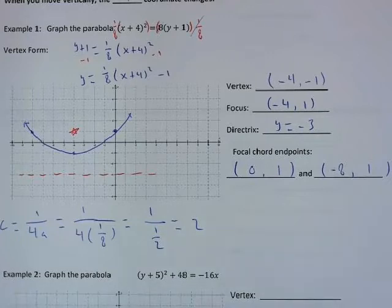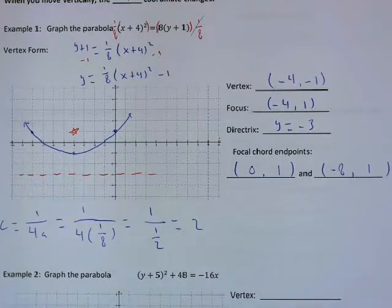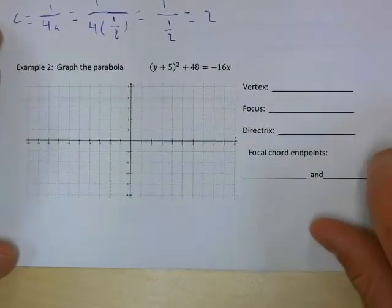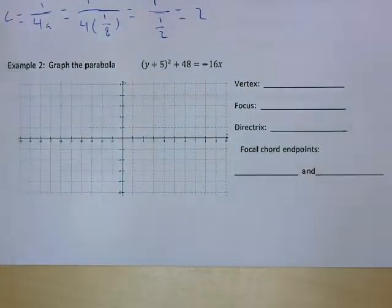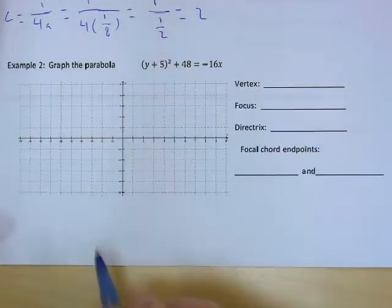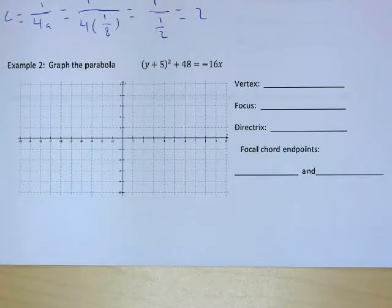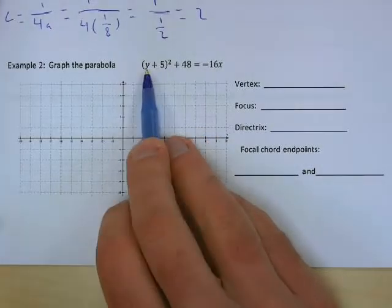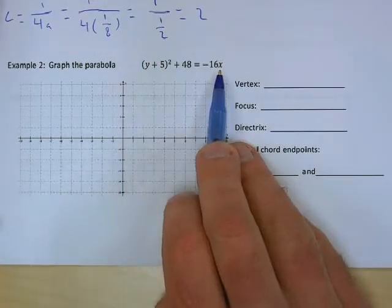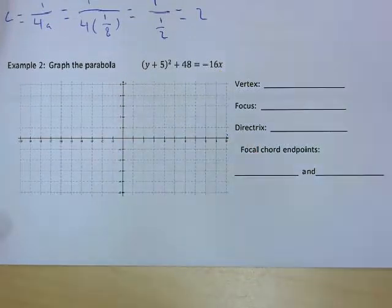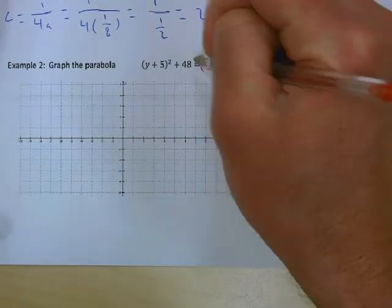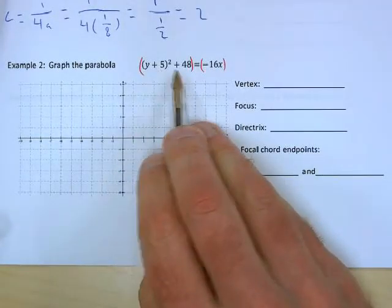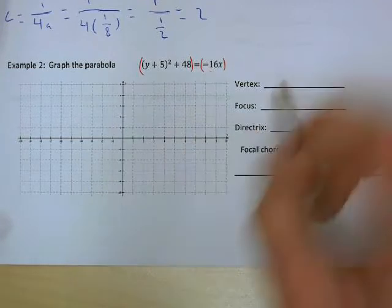That's very similar to the last section — the only difference is the vertex is moving around. Parabolas might be up/down or sideways. Let's look at Example 2. We want to graph this parabola. It's not in vertex form, so we need to get it into x = or y = form. The variable raised to the first power here is x, since y is squared, so we isolate x by multiplying both sides by -1/16.